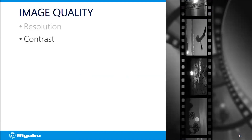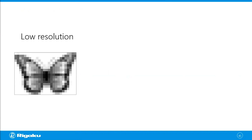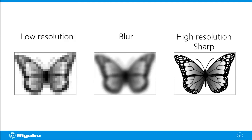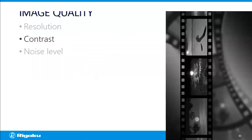Resolution is always important, contrast is also important, and the last one is the noise level. When we say resolution, this term can mean a couple of different things. For example, this is a really low resolution image where the pixel size is way too large compared to the size of the feature you're trying to look at. But what about this image where the pixel size is small enough but the image is blurry? You still can't see what you're trying to see — that's low resolution as well. What you're looking for is a high resolution, sharp image.